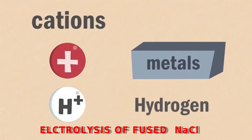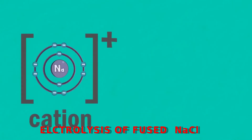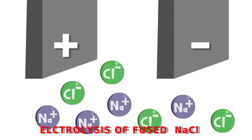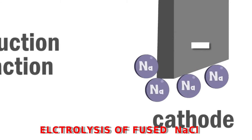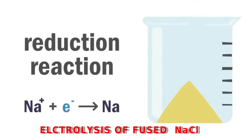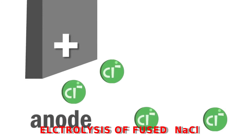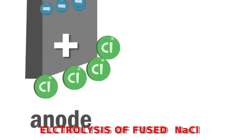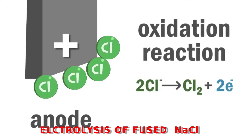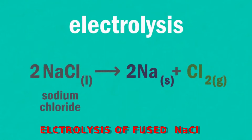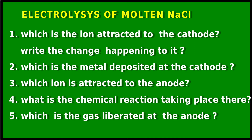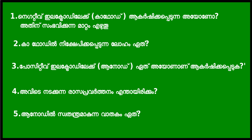In the electrolysis of fused sodium chloride (NaCl), Na⁺ ions and Cl⁻ ions are present. Na⁺ ions move to the cathode, gain electrons, and are reduced — sodium metal is deposited at the cathode. At the anode, 4 Cl⁻ ions lose 4 electrons and become 2 Cl₂, undergoing oxidation — chlorine gas is liberated at the anode and sodium is deposited at the cathode. This process is very relevant in the manufacturing of metals.